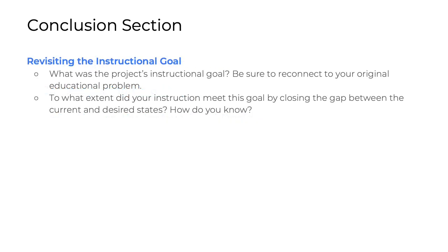For revisiting the instructional goal, restate for the reader one last time what the project's goal was. Be sure to reconnect that goal to the original education problem that kicked off the instructional design journey. Then think about the extent to which your instruction met that goal and whether it closed the gap between current and desired states. Remind the reader how you came to this conclusion by recapping the main points of your discussion — keep it concise and brief.